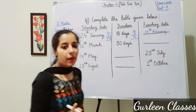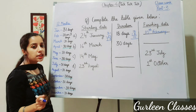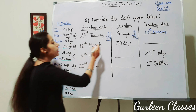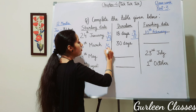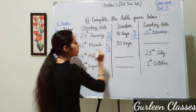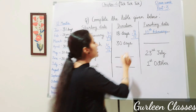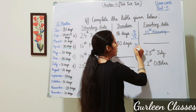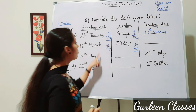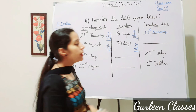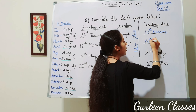Part B: starting date 16th March, duration 30 days. March has 31 days: 31 minus 15 equals 16 remaining days in March. 30 minus 16 equals 14 days into April. Finishing date: 14th April.